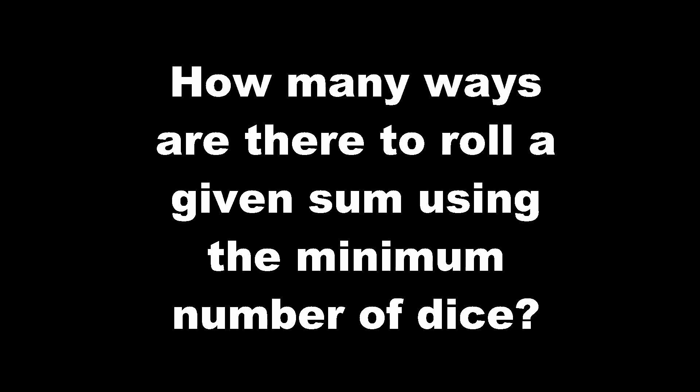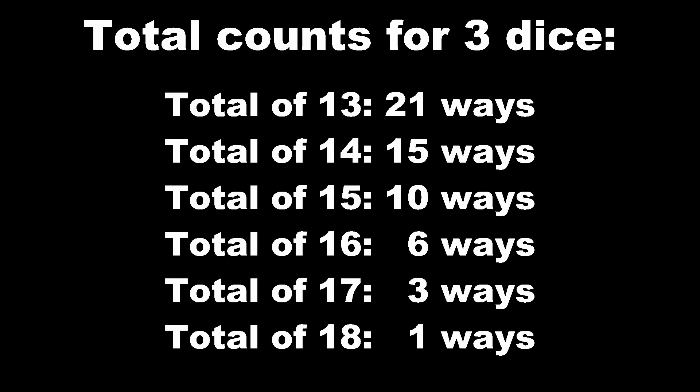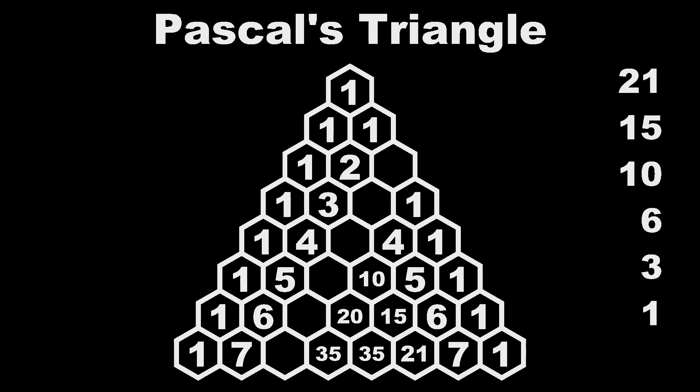For a total of 13, we'll have to yet again add another die. For three dice, our total counts look like this. You've been staring at these numbers for a while now, and if you're familiar with combinatorics, they may be looking quite familiar to you. In fact, these values are taken straight from a really interesting structure called Pascal's Triangle. Maybe you've heard of Pascal's Triangle before.